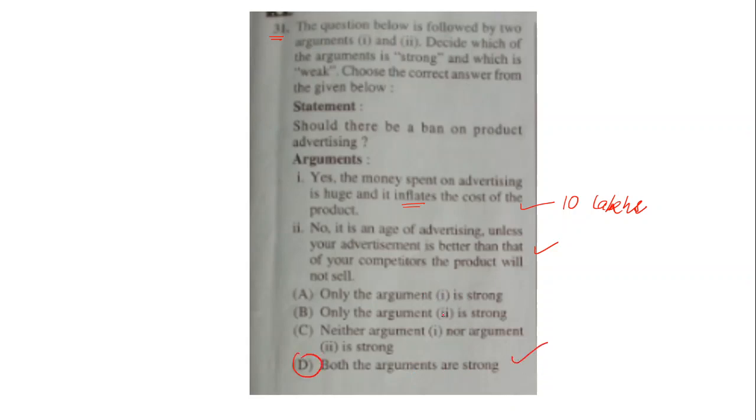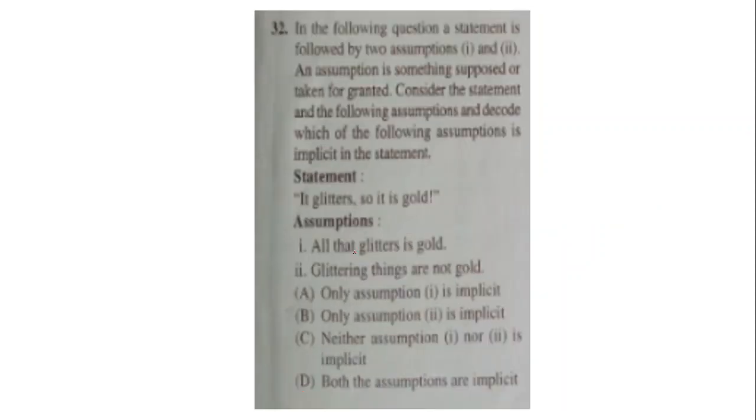The next question that was asked is this. In the following question, a statement is followed by two assumptions. So this is a statement and assumption question that was asked. An assumption is something supposed or taken for granted. Consider the statement and the following assumption and decode which of the following assumption is implicit in the statement. Implicit means something that is hidden in the statement. What is the statement? It glitters, so it is gold. Glitters means something that shines. Assumption is all that glitters is gold. Glittering things are not gold. Only assumption one is implicit, only two is implicit, neither is implicit, or both are implicit.